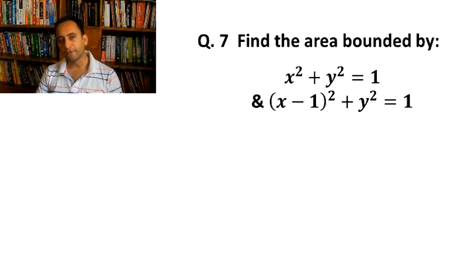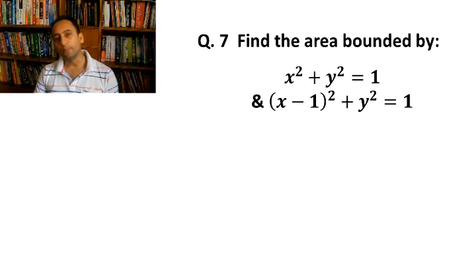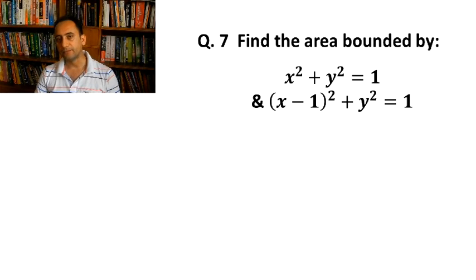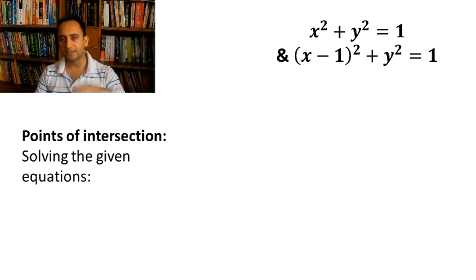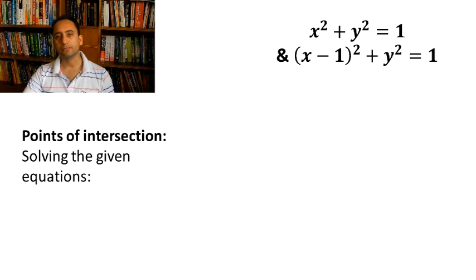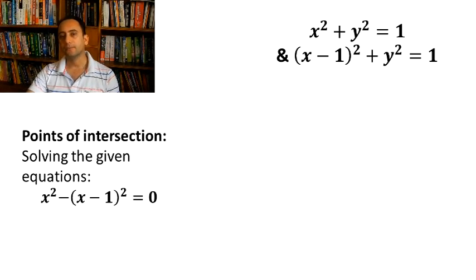Question number 7: Find the area bounded by x² + y² = 1 and (x - 1)² + y² = 1. Both equations represent circles. The first circle has center at the origin and radius 1. The second circle has center at (1, 0) and radius 1. Solving the two equations gives x = 1/2, so the point of intersection is at x = 1/2.